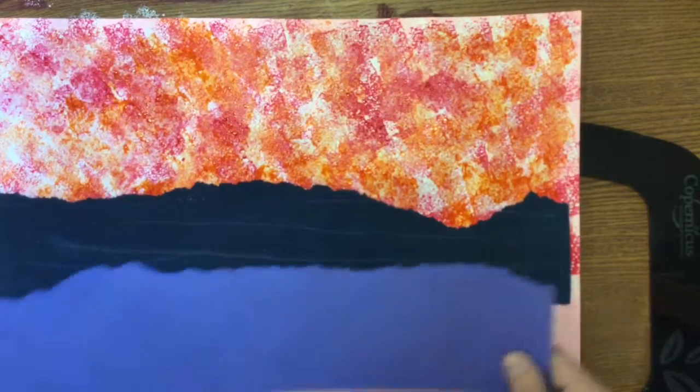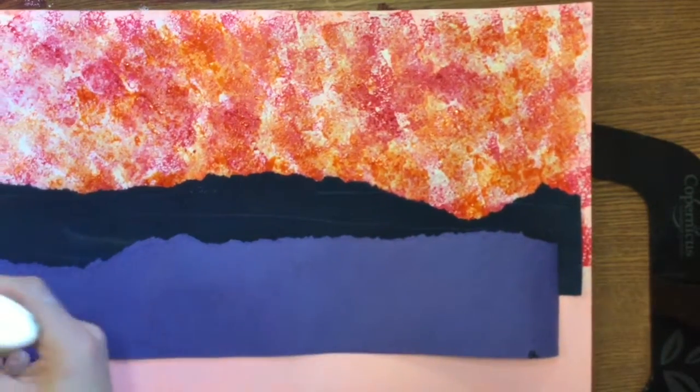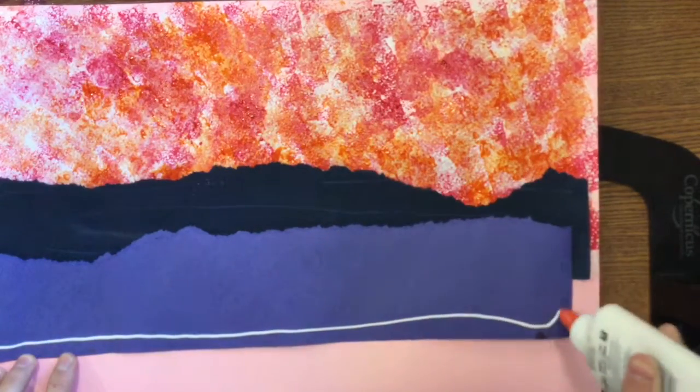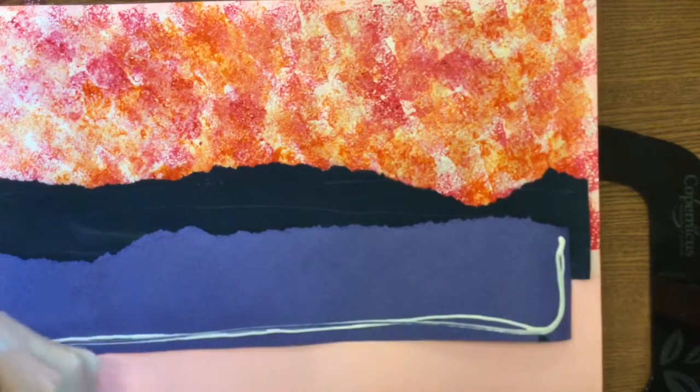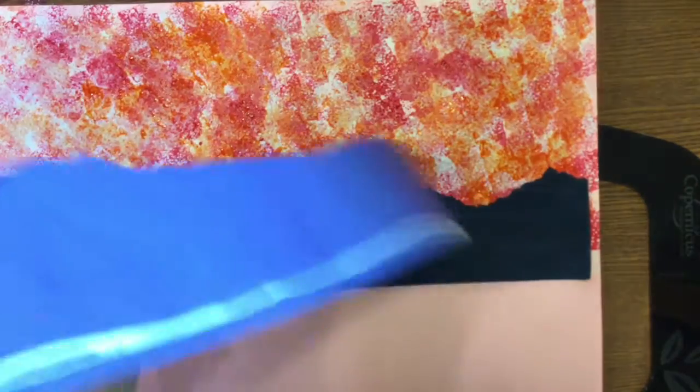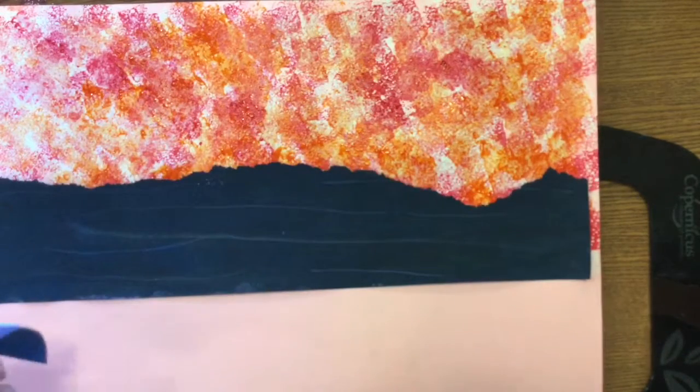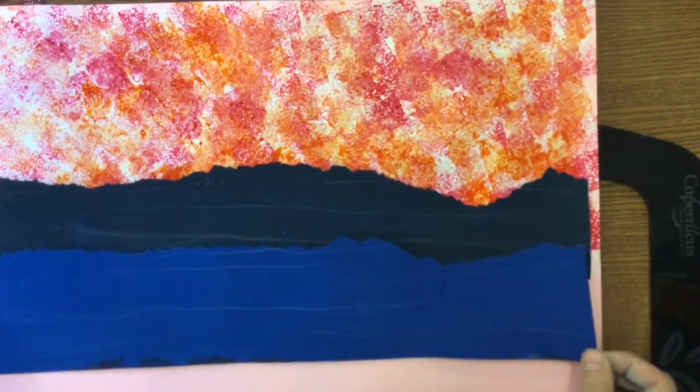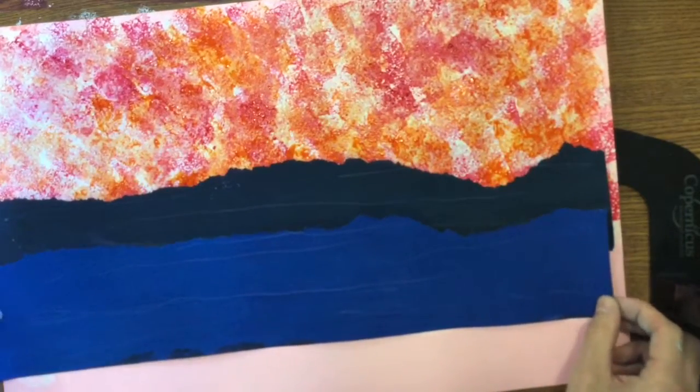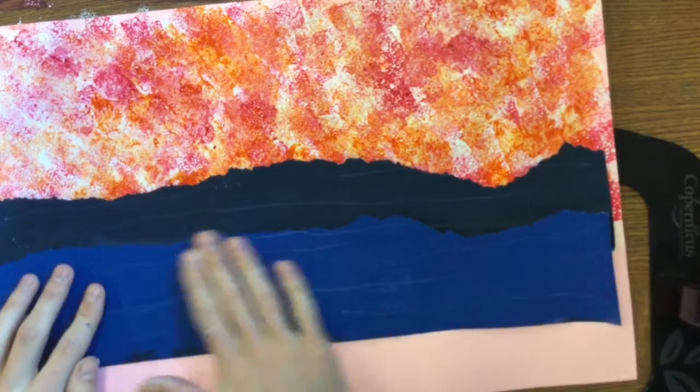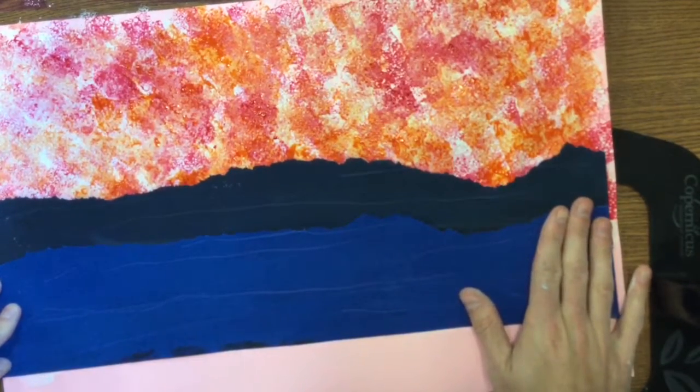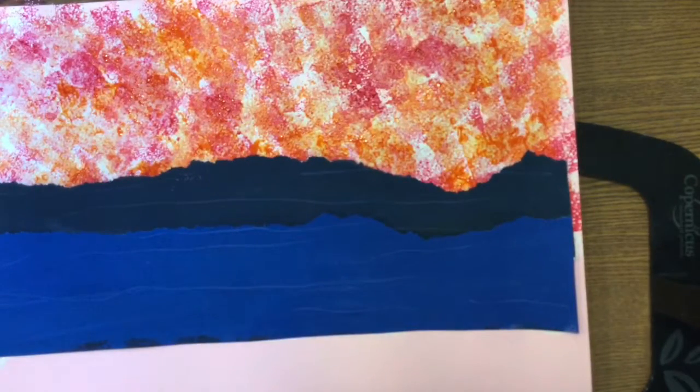The reason I only put glue along the flat edges is because we're going to curl those waves later on. I can do the next one just like I did the last one. I'm going to put some glue along the flat edges. Not along the torn edge. And I'm going to overlap them now. Just like this. I've got two more strips to do.